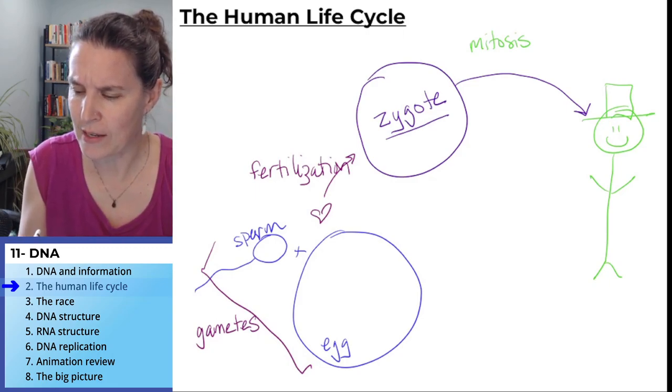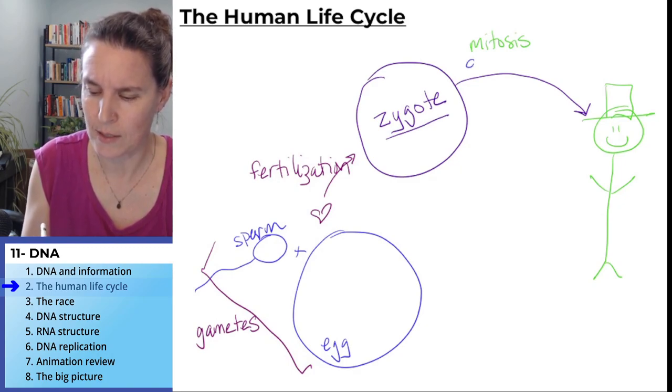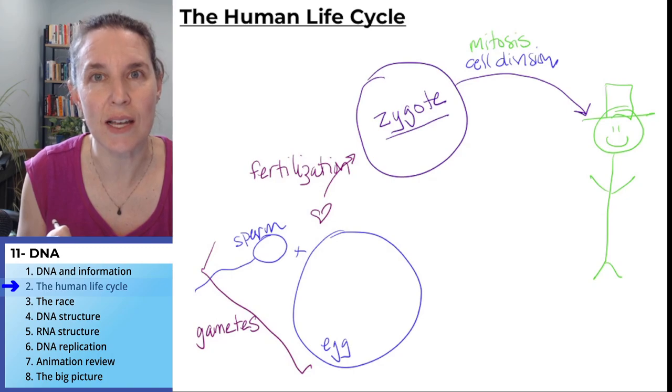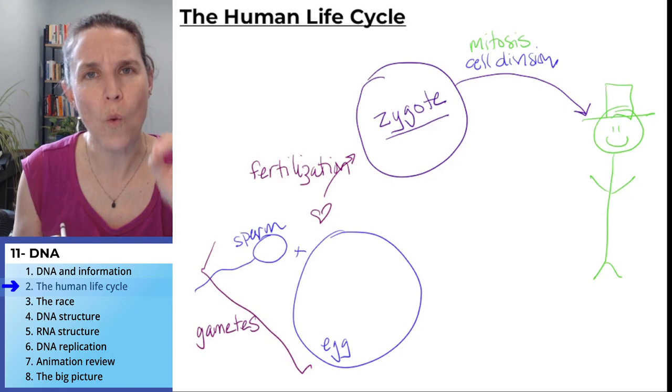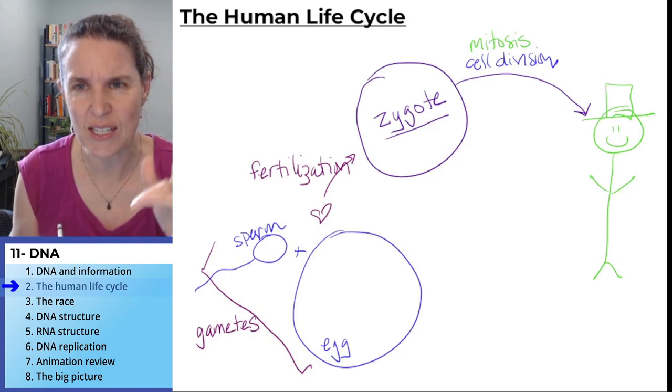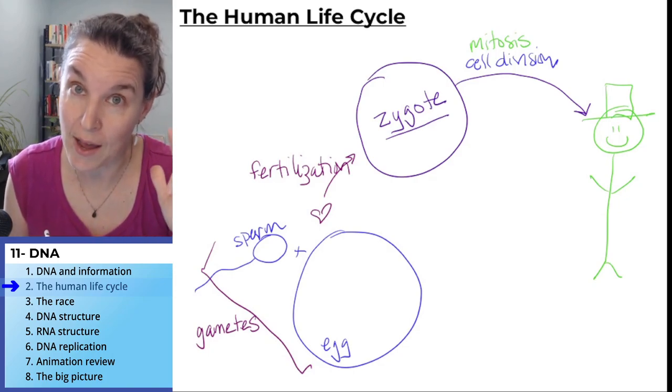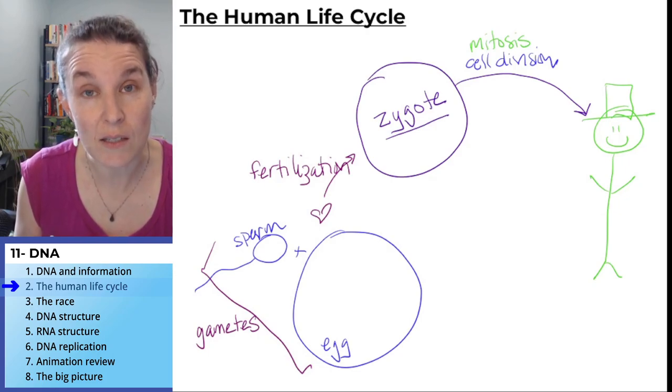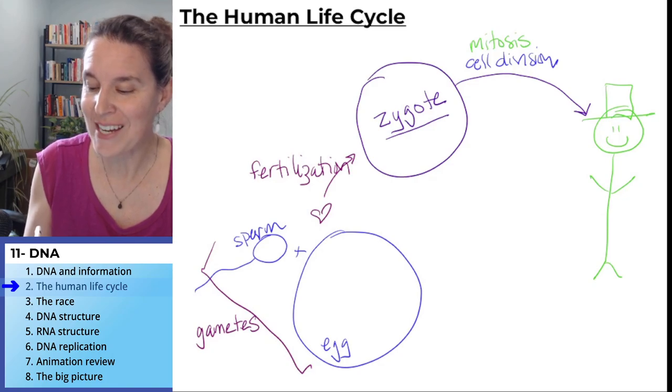I do want to make a note that this process of mitosis is also called cell division. And the result is identical cells. This is weird. This should be like, wait a minute. How do we go from one single cell and divide into what I'm telling you right now is 100 trillion identical cells? Well, they are identical. They have identical DNA.